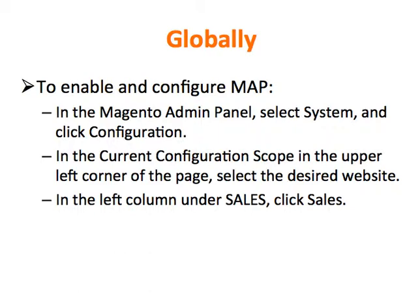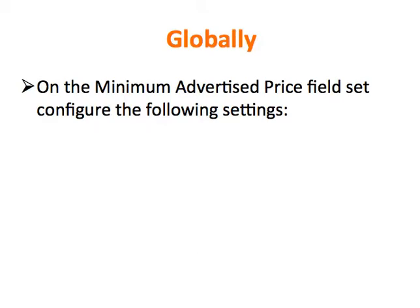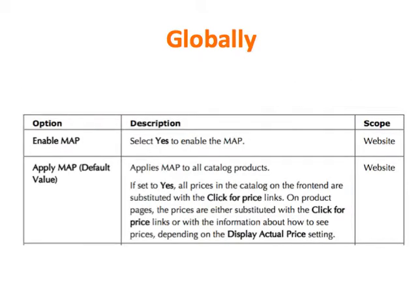In the left column, under Sales, click Sales. On the Minimum Advertised Price field, set Configure to the following settings. Inside Global, go to the Enable Map option and select Yes to enable the MAP. Then for Apply MAP — apply MAP to all catalog products. If set to Yes, all prices in the catalog on the front end are substituted with the Click for Price links. On product pages, the prices are either substituted with Click for Price links or with information about how to see prices, depending on the Display Actual Price setting.